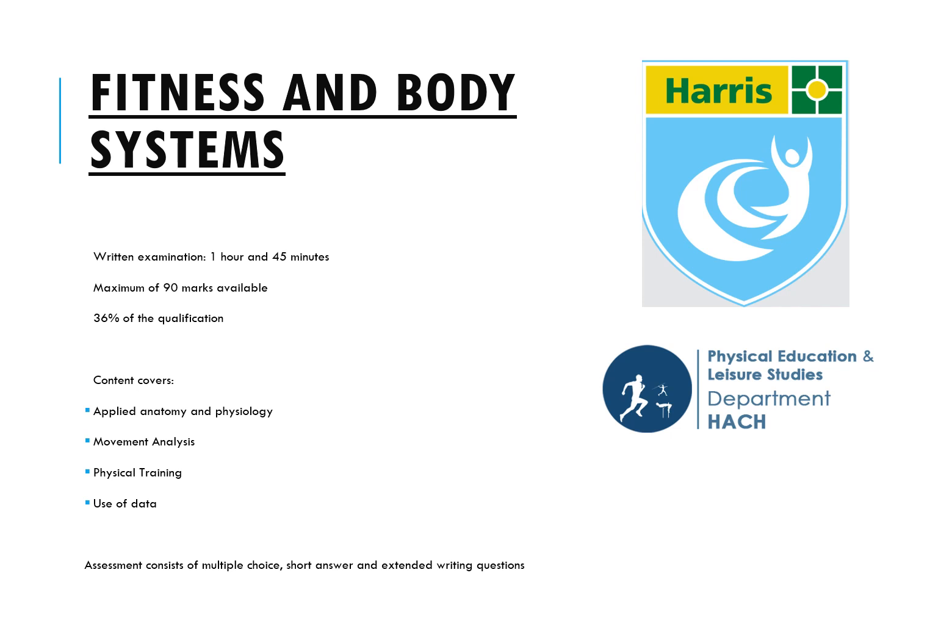The content covered in component one includes applied anatomy and physiology, where you look at the four body systems: the skeletal system, muscular system, respiratory system and cardiovascular system. It also includes movement analysis covering levers, planes and axes; physical training covering methods and principles of training; and how to use and analyse data in order to enhance someone's performance.